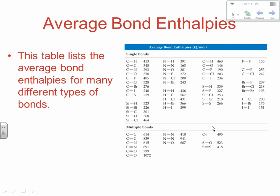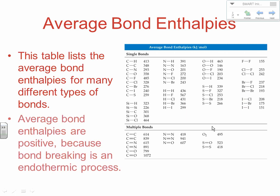This is Table 8.4 from the book. When you're doing your calculations, you'll use this table on page 326. It's a list of average bond enthalpies for many different types of bonds. With a relatively small table, we have a huge number of compound types we can calculate enthalpies for — much simpler than our formation enthalpies tables. You'll notice all these values are positive numbers, because bond breaking is endothermic. We have to put energy in, and that's going to create a math issue we'll look at.